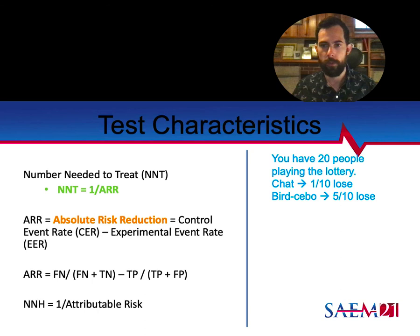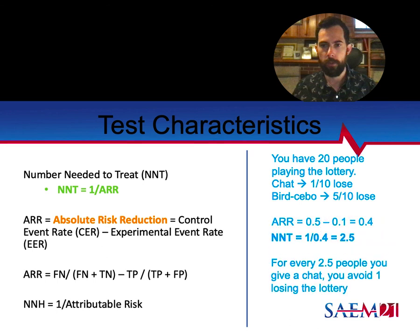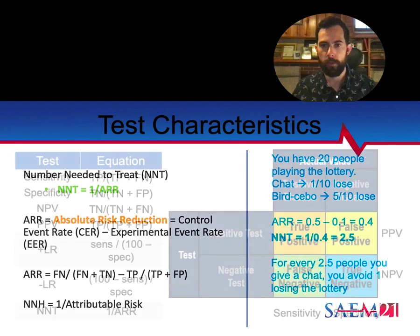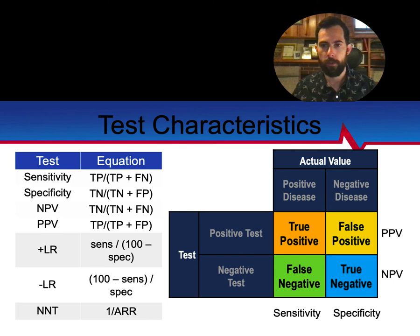Let's calculate NNT with an example. You have a study of 20 people playing the lottery; you give half of them chats. In the chat group, one out of ten loses the lottery. In the 'bird sebo' group — a real bird, but not a chat, as a control — five out of ten lose. So the absolute risk reduction is 0.5 minus 0.1 equals 0.4. The NNT is the reciprocal: 1 divided by 0.4 equals 2.5. For every 2.5 people you give a chat, you avoid one person losing the lottery.